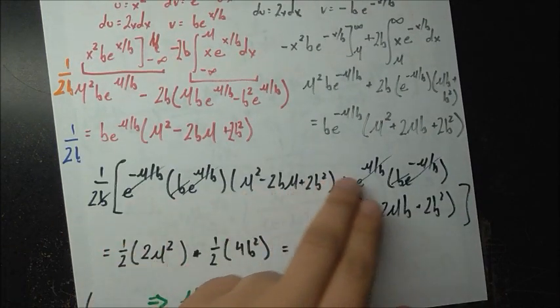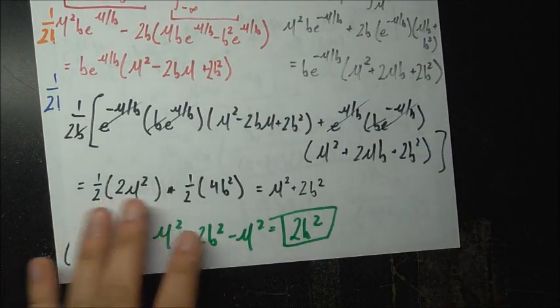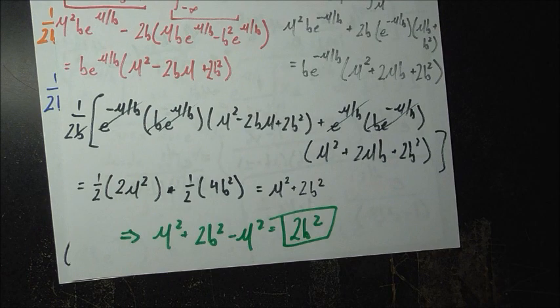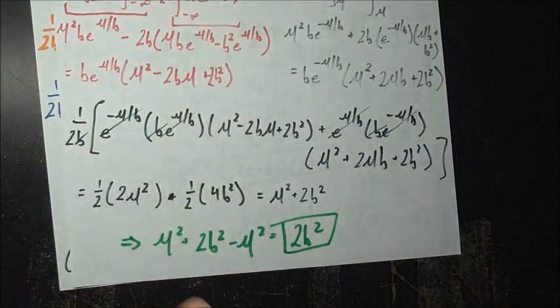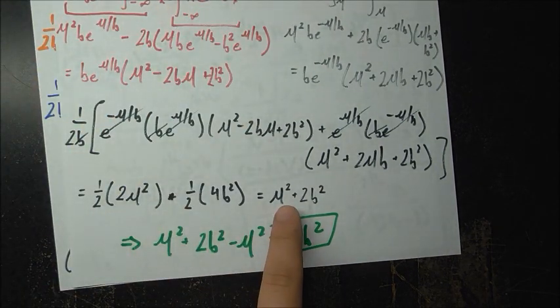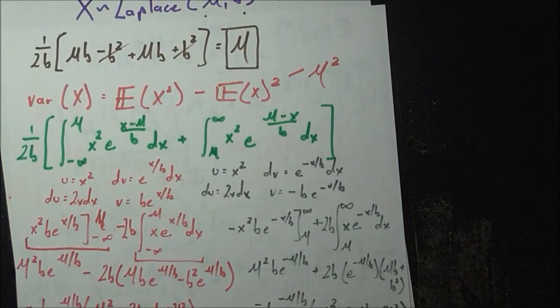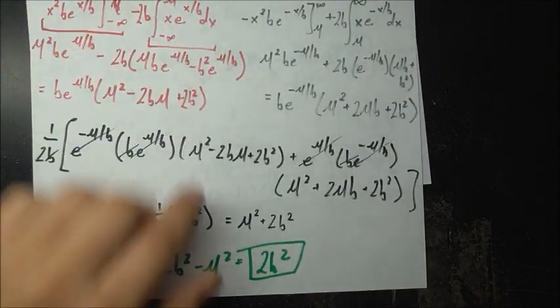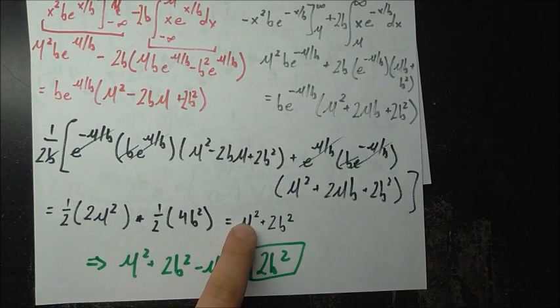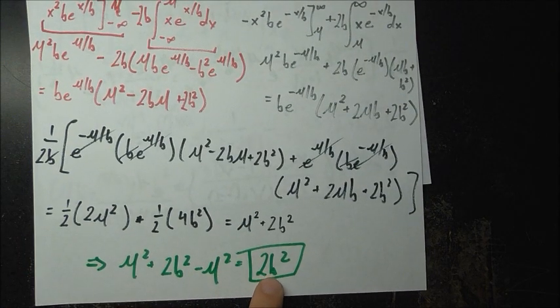The mu squared cancels, and we are left with 2b squared. So the variance of a Laplace distribution is 2b squared.